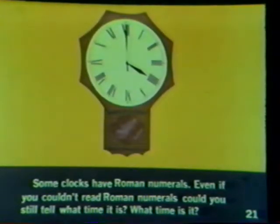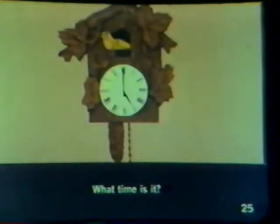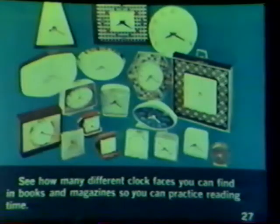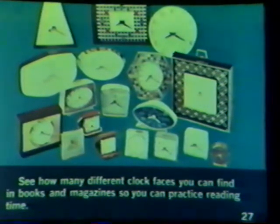Some clocks have Roman numerals. Even if you couldn't read Roman numerals, you could still tell what time it is. What time is it? It is 4 o'clock. What time is it? It is 7 minutes after 7 o'clock. What time is it? It is 5 o'clock. See how many different clock faces you can find in books and magazines so you can practice reading time.